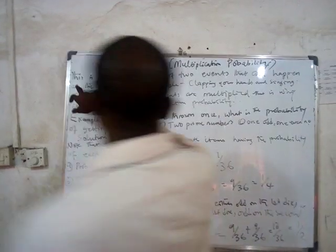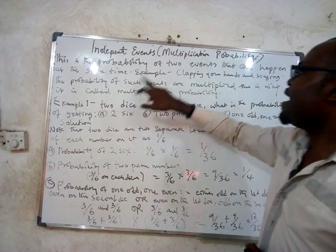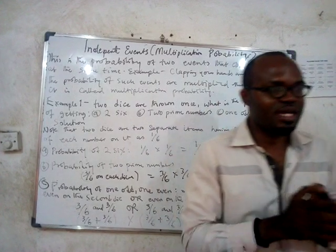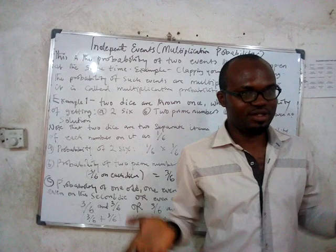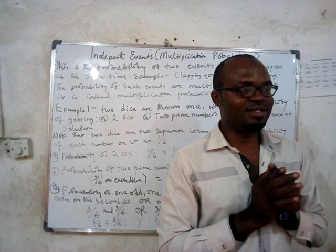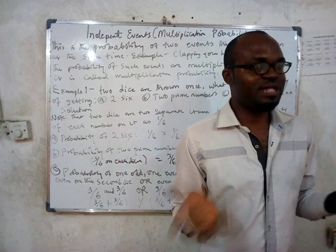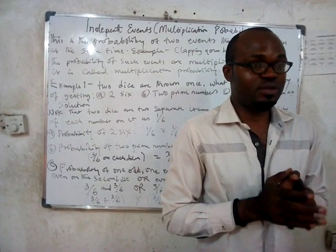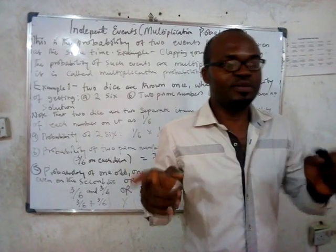So this is the probability of two events that can happen at the same time. For example, clapping your hands and singing. Can you be clapping your hands and singing at the same time? That's what happens in church — you'll be clapping and you'll be singing. So clapping and singing are two independent events. They are independent of each other. Doing one cannot stop you from doing the other.